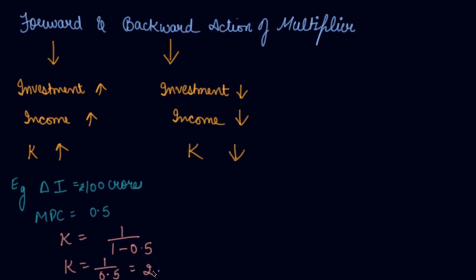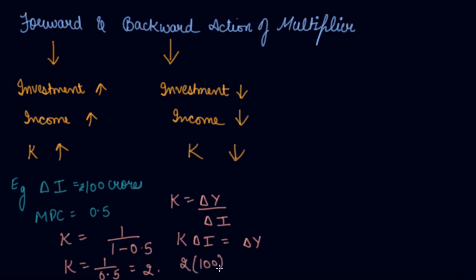We also know that K equals change in Y divided by change in investment, so rearranging: change in Y equals K multiplied by change in investment. With K = 2 and change in investment = 100 crores, your change in income is 200 crores. This is the forward action of the multiplier.